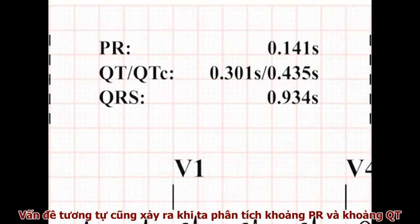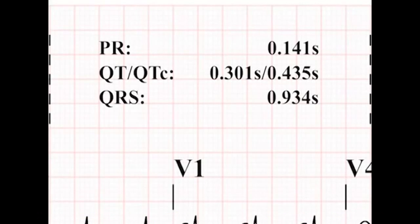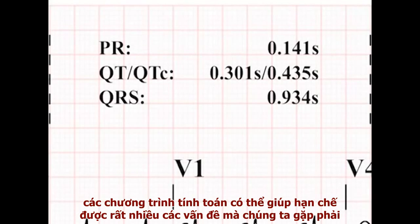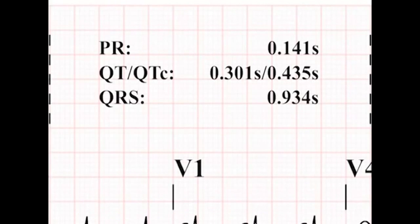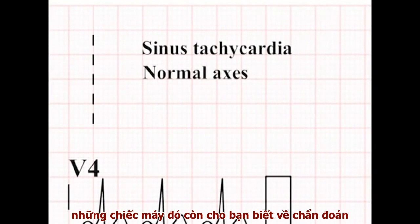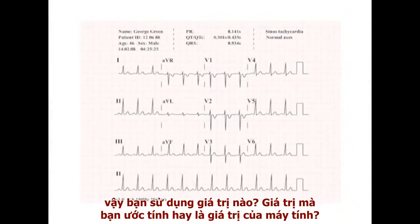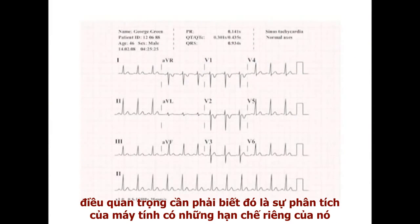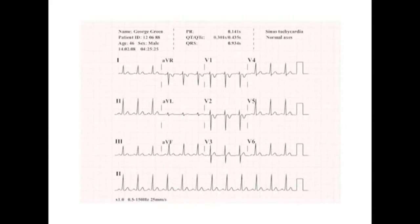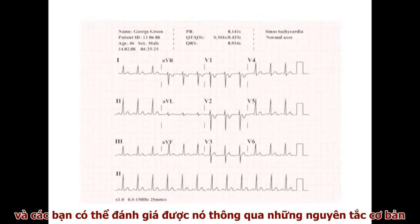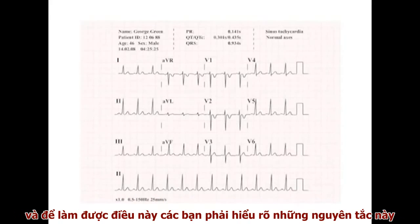Exactly the same problems exist for the analysis of the PR interval and the QT interval, and modern machines present an integrated value calculated using all 12 leads. The computerised calculations attempt to eliminate many of the problems outlined when discussing estimation of the corrected QT. These machines will even present you with a diagnosis. Both manual and computer values have merits, but computer analysis has its own limitations. At the present time, the analysis of the most complex ECGs still rests with you, so you must be able to do it from basic principles.